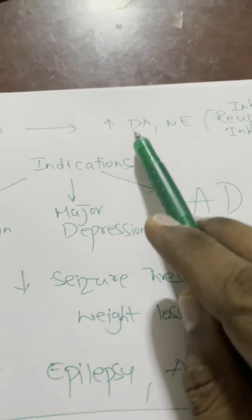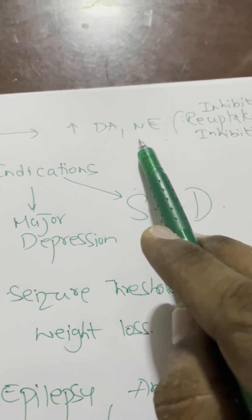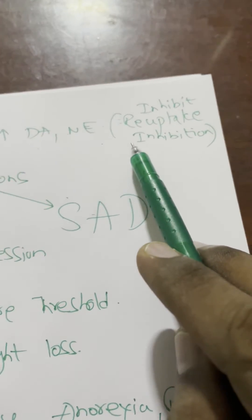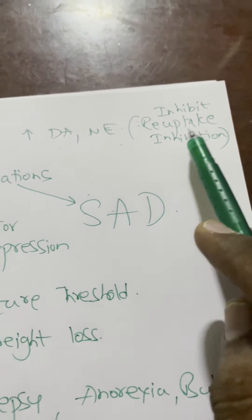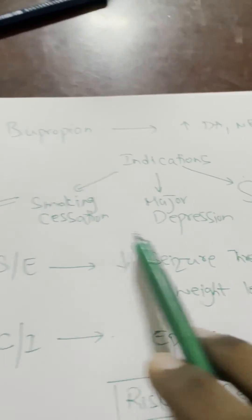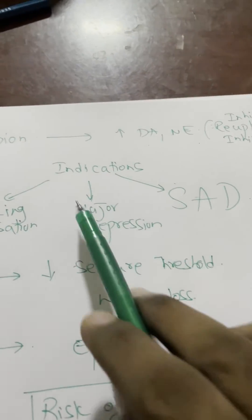Bupropion is one of the favorite topics of the examiner in USMLE and also in NEET-PGA exam. Let us do the revision of bupropion in one minute. Bupropion increases the dopamine and norepinephrine levels because it inhibits their reuptake. So what are the three indications of bupropion?